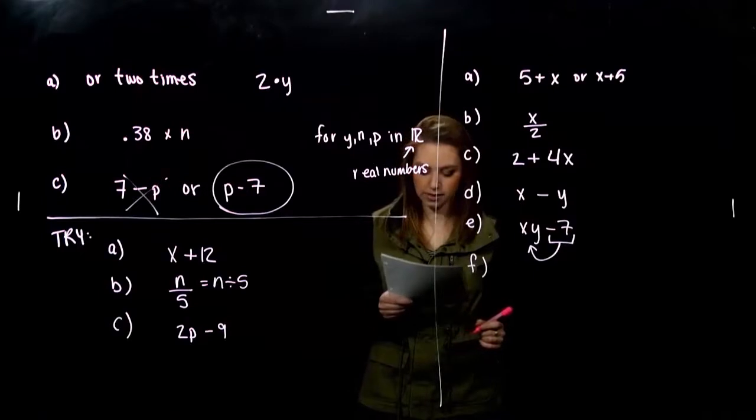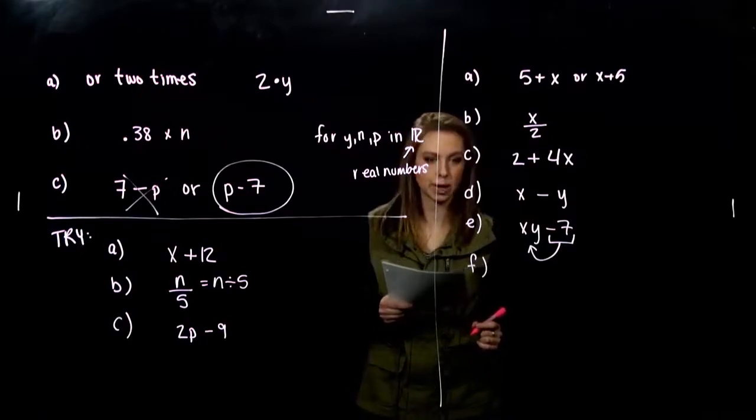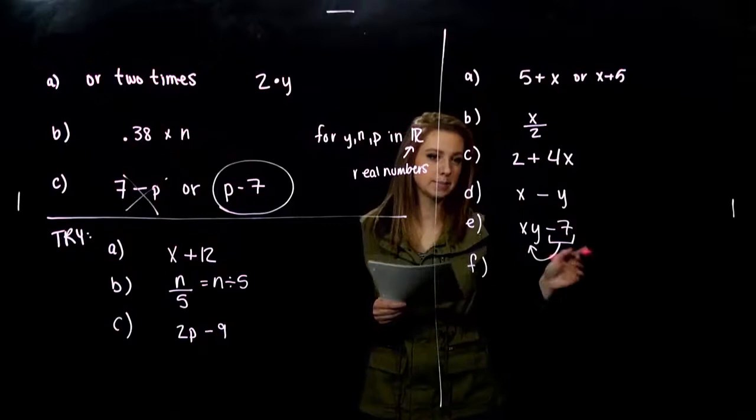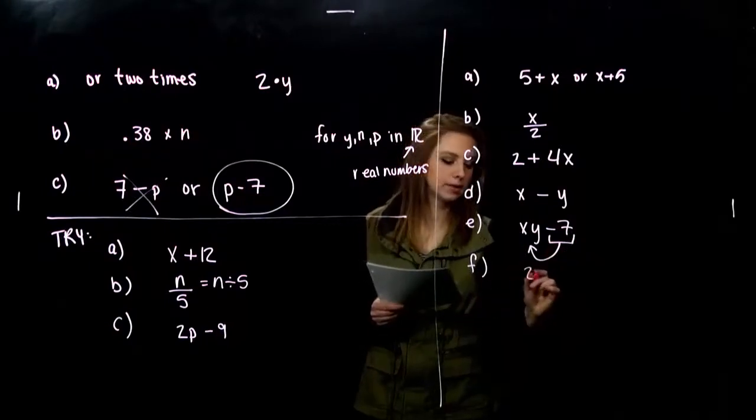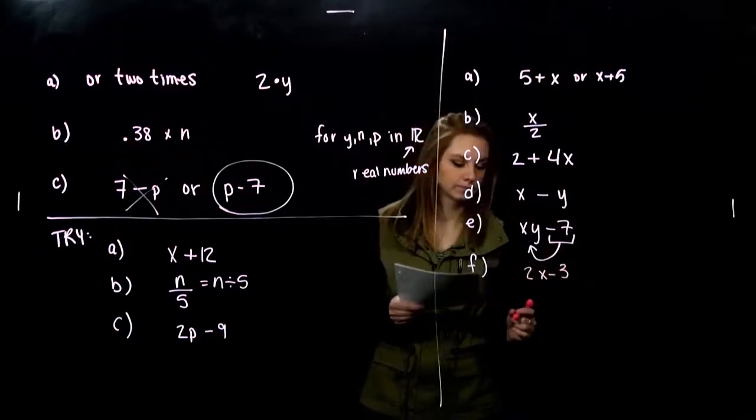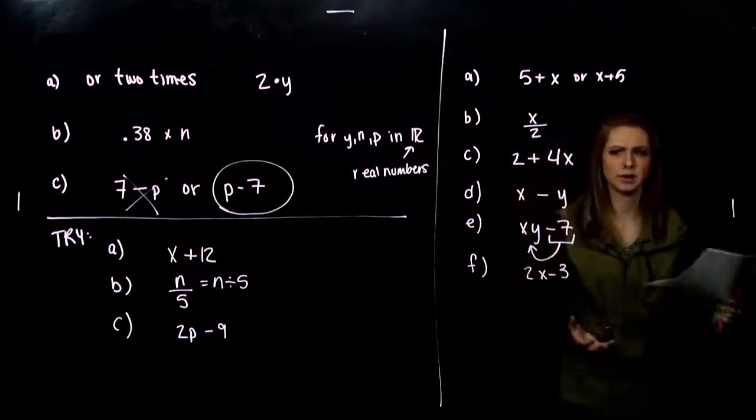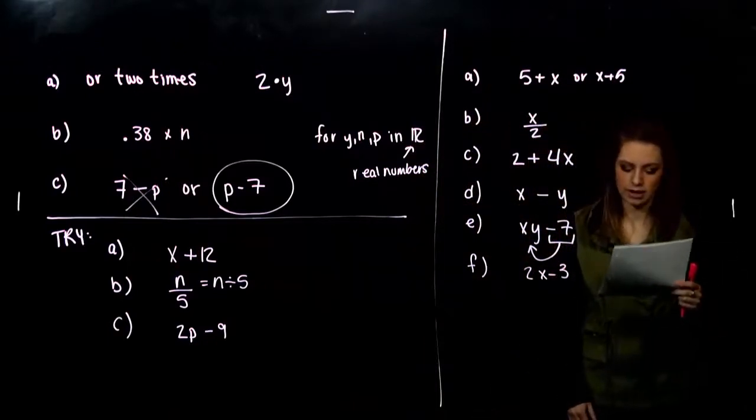And last. Three less than twice some number. So I have two times the number and I'm taking away three. So if you have to break it down like that, go ahead and do it. Talk it out loud.